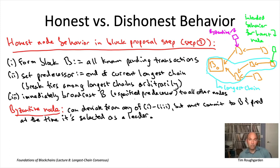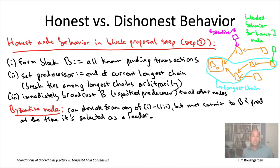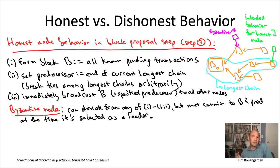The final point — which may seem obvious but a Byzantine node could deviate from — is that as an honest leader, once you form a block, you should immediately broadcast it to all other nodes. These are the three kinds of Byzantine deviations to worry about. The first — putting together empty or bad blocks — is not really worrying. The third — delaying announcement of a block — will actually make our proofs of liveness and consistency stronger, not weaker, for this lecture.